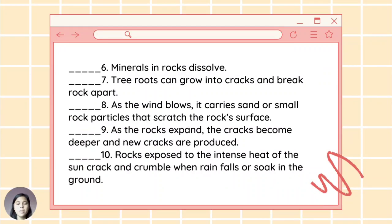For number six: Minerals in rocks dissolve. Number seven: Tree roots can grow into cracks and break rock apart. Number eight: As the wind blows, it carries sand or small rock particles that scratch the rock's surface. Number nine: As the rocks expand, the cracks become deeper and new cracks are produced. And number ten: Rocks are exposed to the intense heat of the sun, crack and crumble when rain falls or soaks in the ground. And these are the correct answers. For number six: Wow emoji. Seven: Heart emoji. Eight: Heart emoji. Nine: Heart emoji. And ten: Wow emoji.